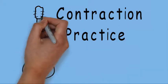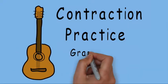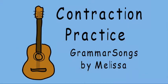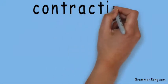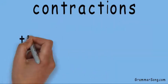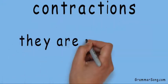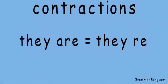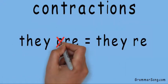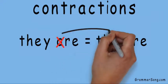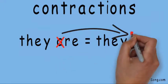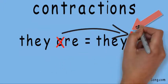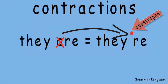Contraction Practice at Grammar Songs by Melissa. You have learned that contractions are words in the English language. Two words are shortened to make one word, and a special punctuation mark called an apostrophe replaces the missing letter or letters.